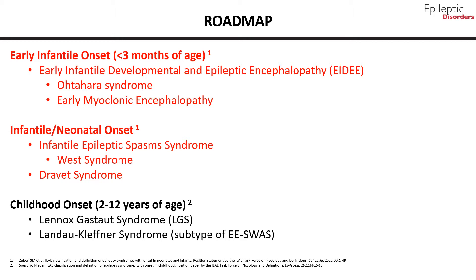Early infantile developmental and epileptic encephalopathy, EIDEE, includes neonates and infants previously classified as Otahara syndrome and early myoclonic encephalopathy. The syndrome may have many and varied underlying etiologies, including genetic, metabolic, and structural. The electroclinical descriptions of Otahara syndrome and early myoclonic encephalopathy have been extremely valuable in epilepsy classification, allowing clinicians and researchers to study causes, outcomes, and treatment. However, the electroclinical features of these two syndromes have considerable overlap and share similar underlying etiologies. The ILAE proposed that separating EIDEE into Otahara syndrome versus early myoclonic encephalopathy no longer provides valuable information for clinical decision-making or prognosis, and thus they will be discussed together as EIDEE.